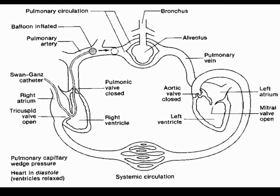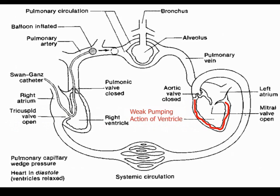This diagram is showing the normal circulation in the body. On the left-hand side of your screen, you see the right side of the heart pumping blood to the lungs, then to the left side of the heart, and then back through the systemic circulation and back to the right. So let's plug in some of the stuff that's happening here in heart failure. First of all, we have a weak pumping action of the ventricle, which is then going to lead to fluid backing up into the lung, causing some of the symptoms we see.